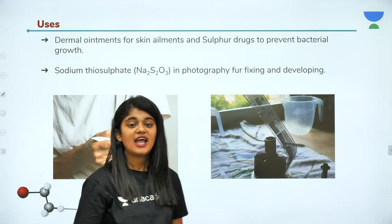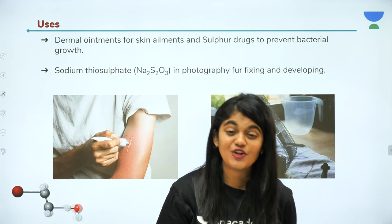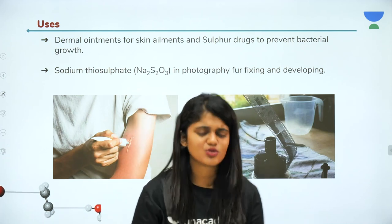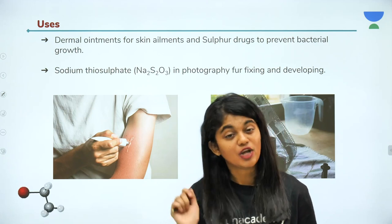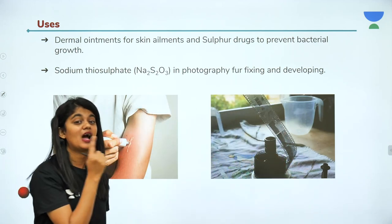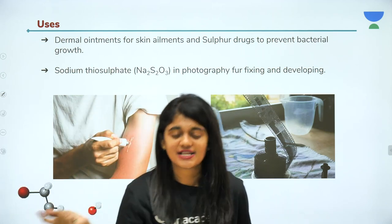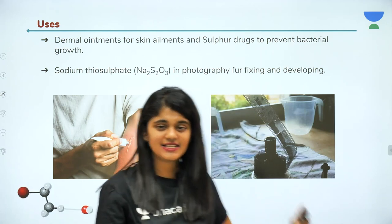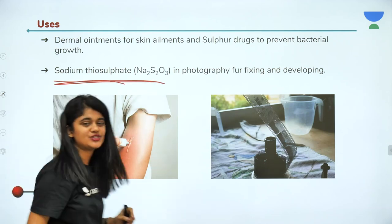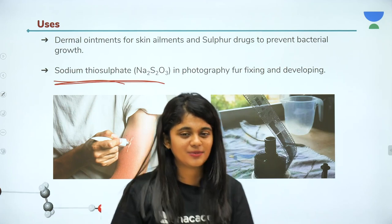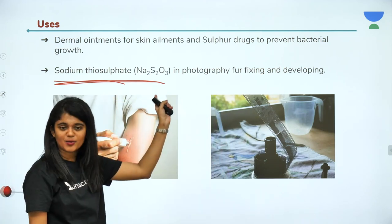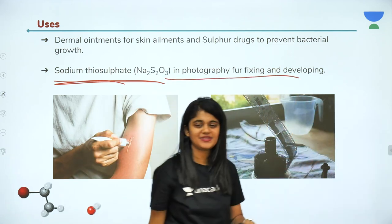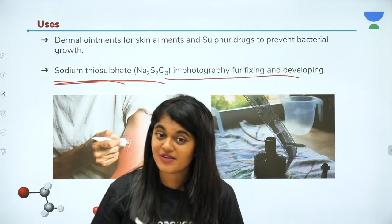Sulfur is used in dermal ointments for skin ailments and in sulfa drugs to prevent bacterial growth. Sulfur is used widely — in skin treatments and to hinder bacterial growth. Sodium thiosulfate (Na₂S₂O₃) is used in photography for developing films.